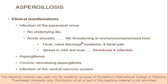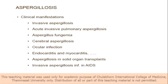Aspergillosis can invade into blood vessels and cause thrombosis — clot in the blood vessel. The most common location is the sinuses, causing sinusitis. We must differentiate whether sinusitis is caused by septate hyphae or non-septate hyphae — this is a very important point. It can cause infections in any organ: acute invasive, pulmonary, cerebral, and other organs.